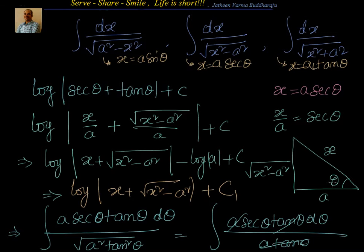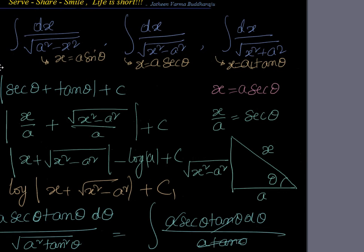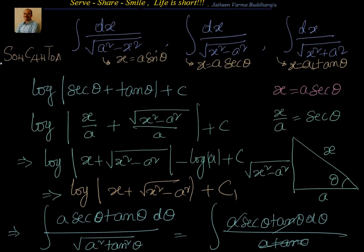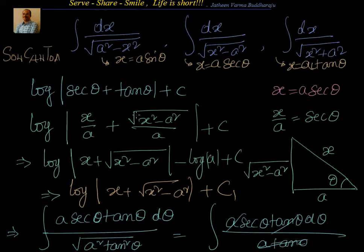By Pythagoras theorem, since secant theta is x by a, this side will be root of x square minus a square. So tan theta equals opposite by adjacent, that is root of x square minus a square by a. You can also try the third integral: dx by root of x square plus a square, which will come out as log of x plus root of x square plus a square — instead of minus under the radical, it will be plus. We will do that in a couple of minutes.